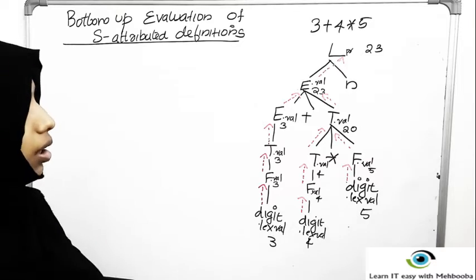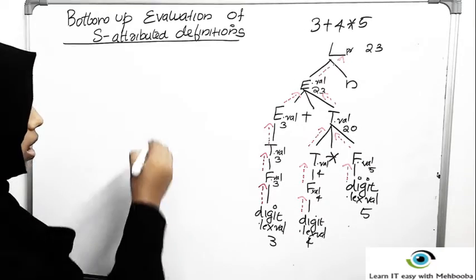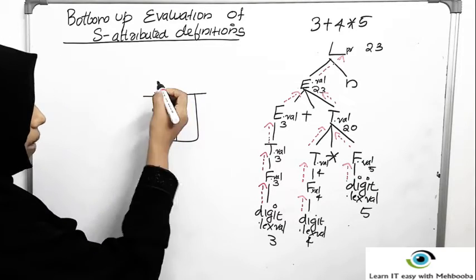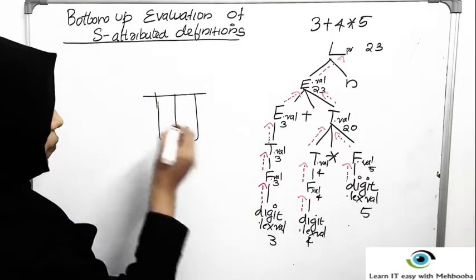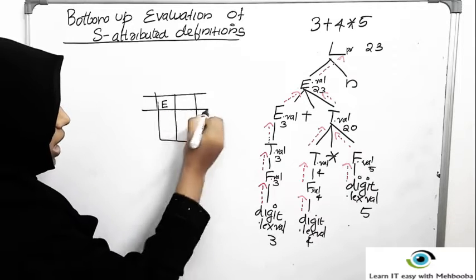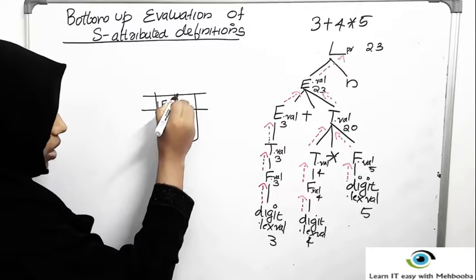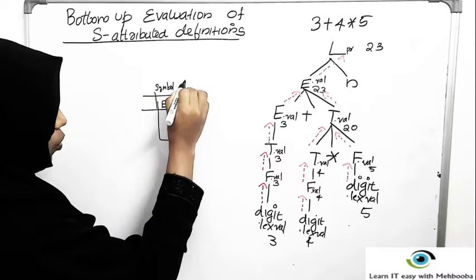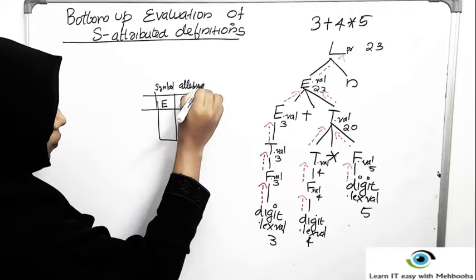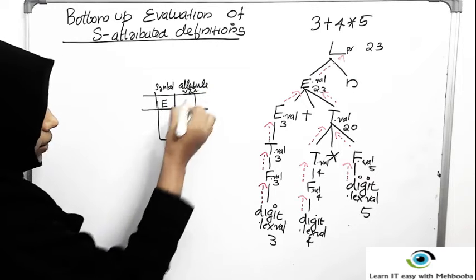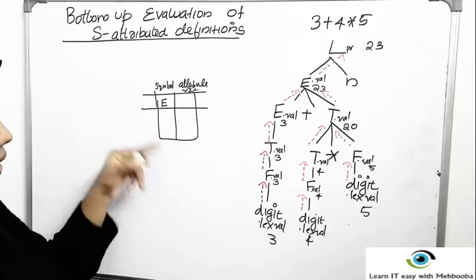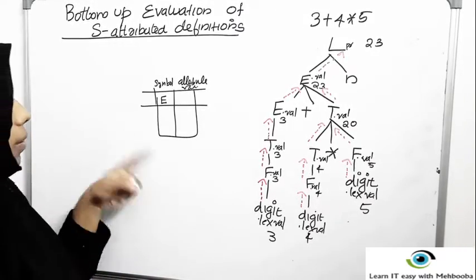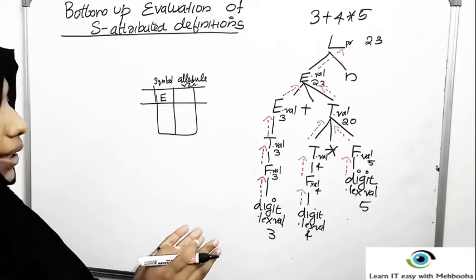The parser maintains a stack which is actually a pair of two arrays. In the first array the grammar symbols are stored — for example, if it is E, the grammar symbol E is stored here. E dot value, the value, will be stored in the second array. So a pair of arrays is maintained in the form of a stack, which is a last-in-first-out data structure.